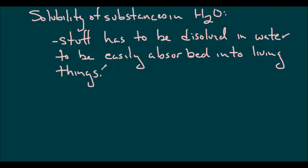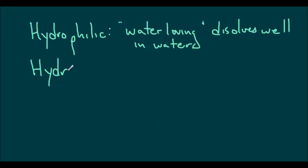Things like salt, sodium chloride, are very easily dissolved. However, things like fats and oils are not so easily dissolved, and they have to be absorbed into a body a different way. For this reason, we end up having two different words that we can use to describe how things dissolve in water. One of these is called hydrophilic. Hydrophilic means that it's water-loving and dissolves very well in water. Alternatively, hydrophobic means that it's water-fearing and does not dissolve very well in water.